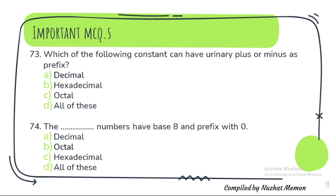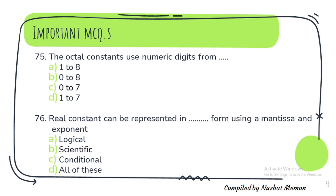Question 73: Which of the following constants can have unary plus or minus as prefix? The correct option is decimal. Question 74: The dash numbers have base 8 and prefix with 0 — the correct option is octal numbers. Question 75: The octal constants use numeric digits from 0 to 7.